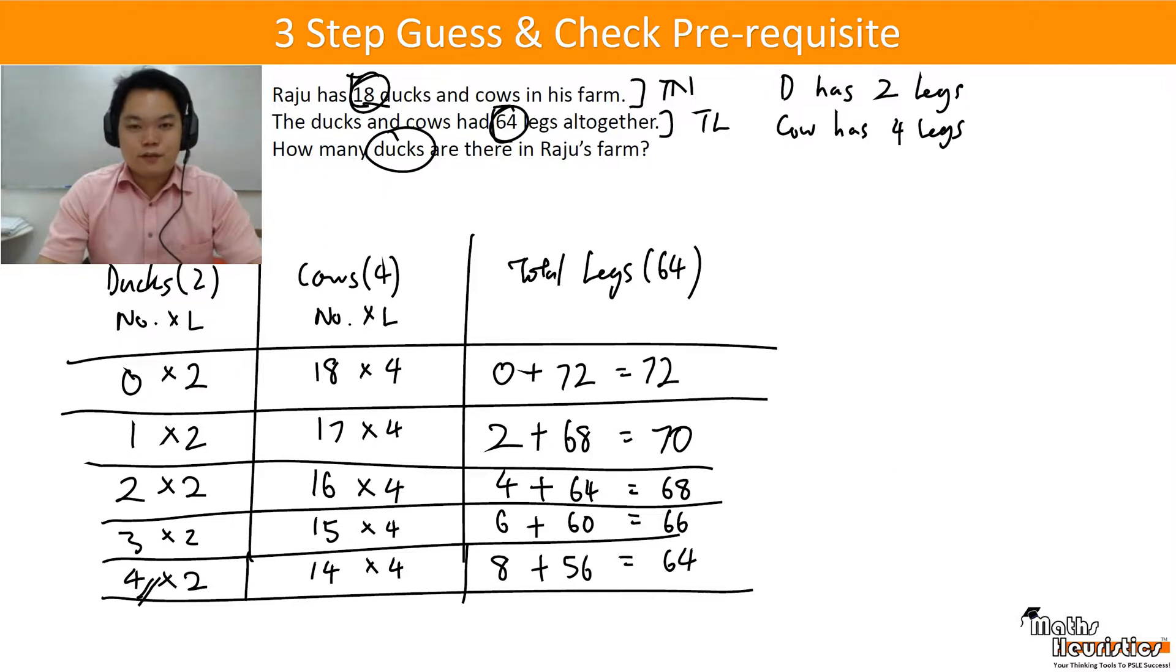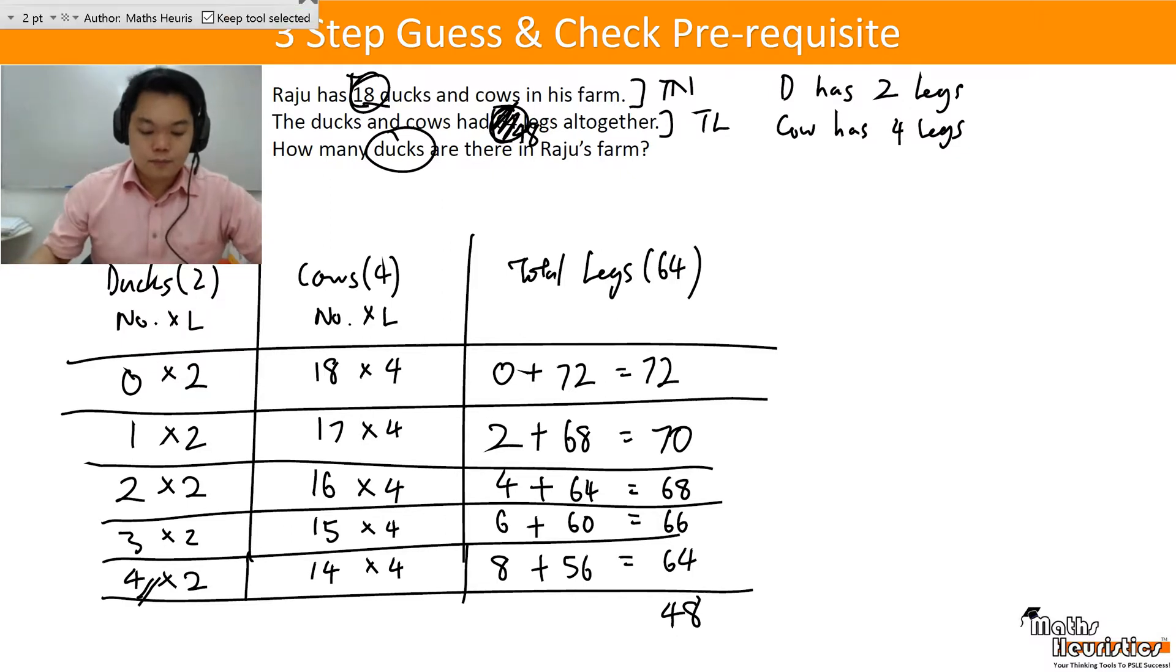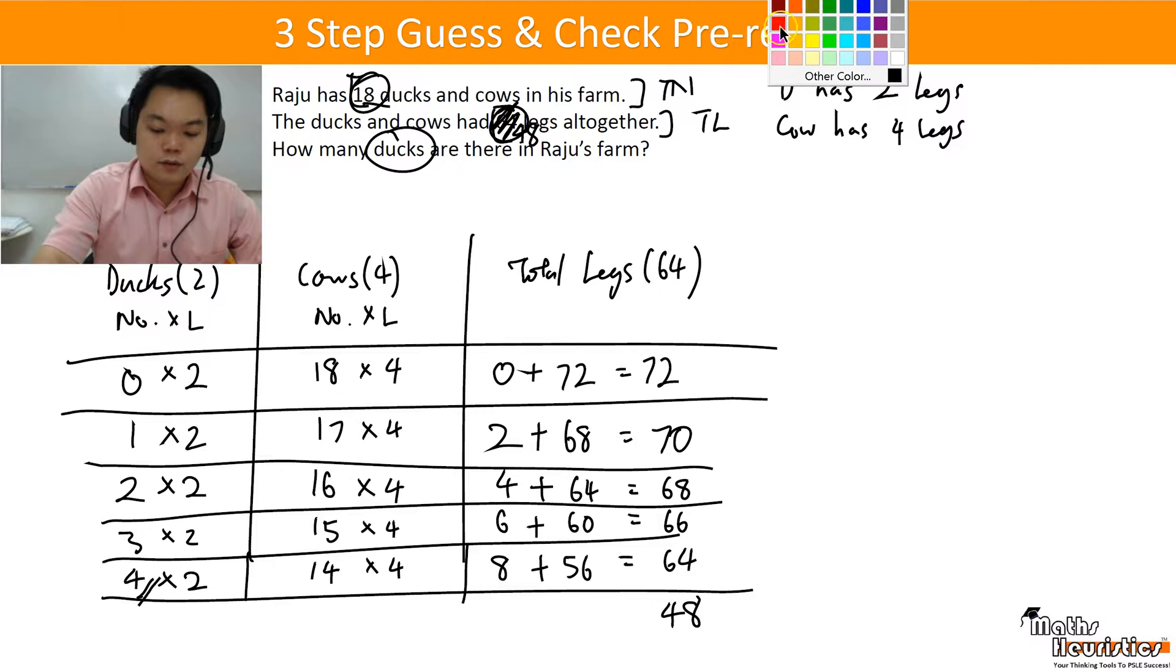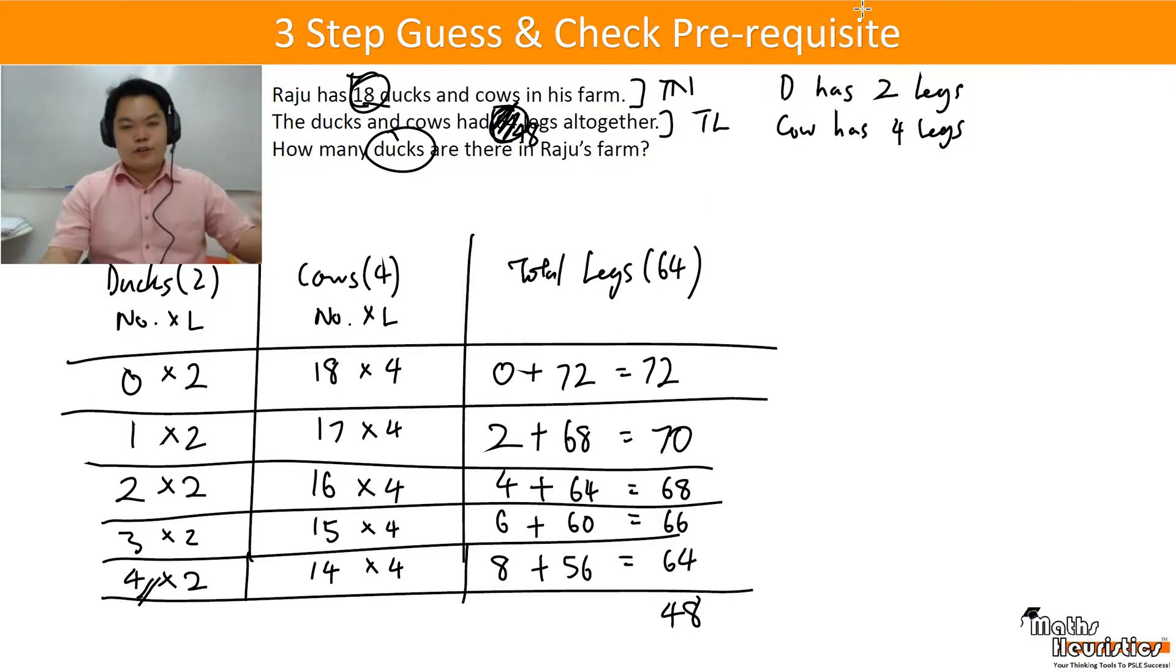But what if they give you a number that is very far away from what you assume? Like let's say, let's say for this example you change it to 48. So if this is 48, you want to hit 48. Is there a more general way to do it? Well, yes.